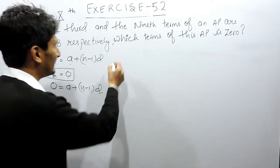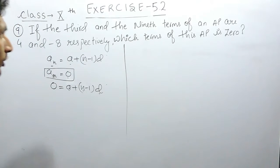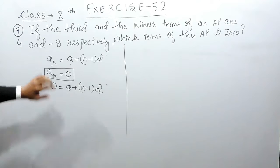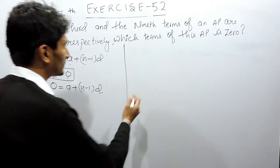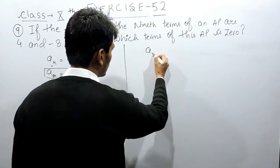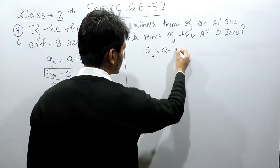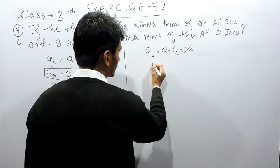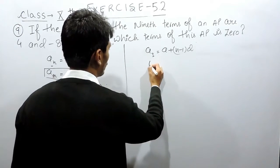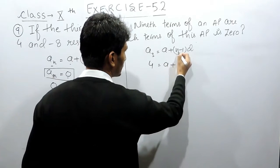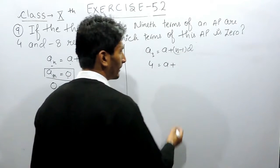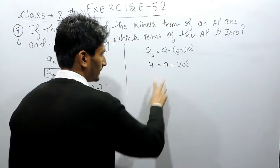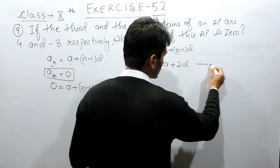How to find a and d? We have two pieces of information: the third term and the ninth term of the AP are 4 and minus 8. So for the third term, we use the formula again. The third term is given as 4, so: a plus 3 minus 1 into d equals 4, which gives us a plus 2d equals 4. This is our first equation.